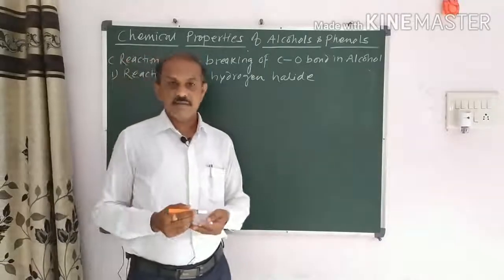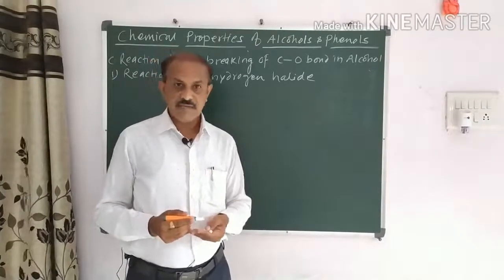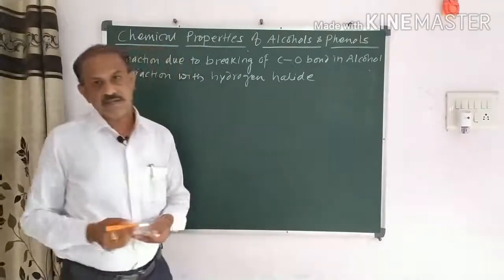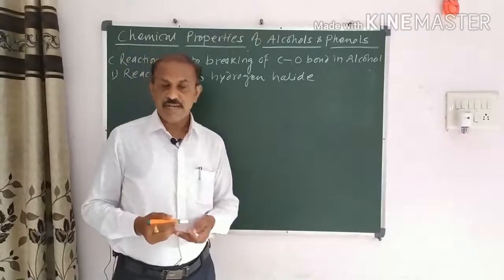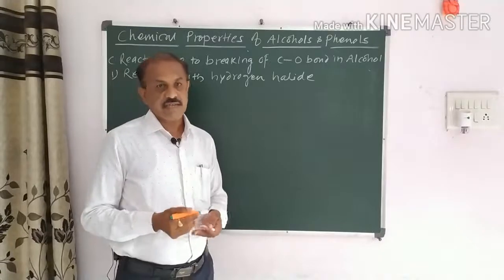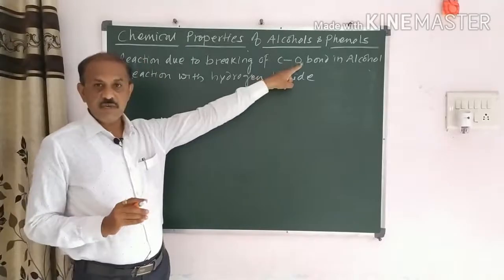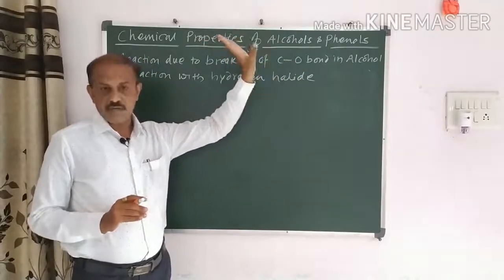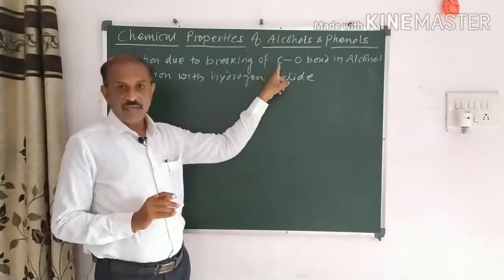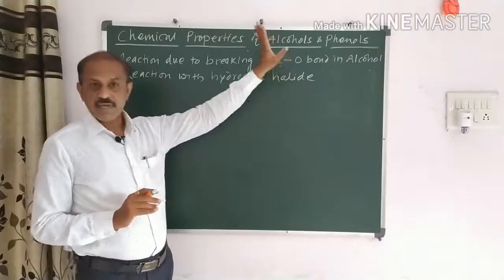Dear friends, welcome again to my channel Easy Easy Tech. Let's continue with the reactions from yesterday — the chemical properties of alcohol and phenol. Yesterday we took some properties regarding alcohols and phenols, and now we continue with the reactions due to the breaking of the C–O bond in alcohol, having previously discussed the breaking of the O–H bond in alcohol.